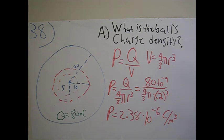Substituting in, we have 80 times 10⁻⁹ divided by 4/3 π times 0.2³. This gives a value for ρ as 2.38 times 10⁻⁶ coulombs per meter cubed.